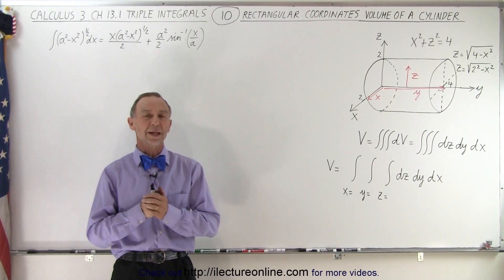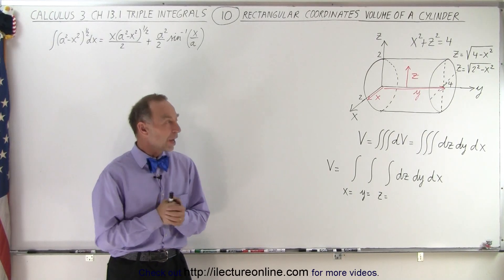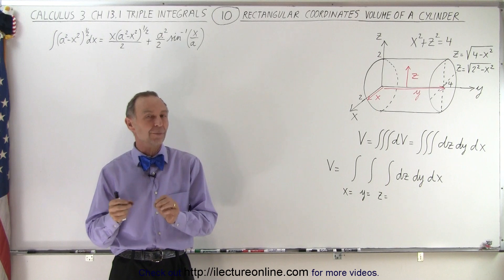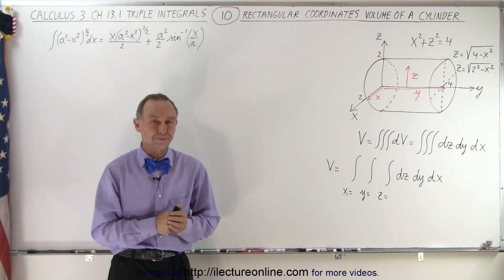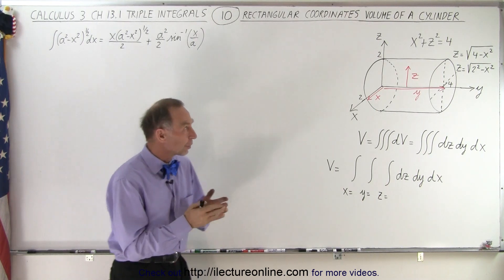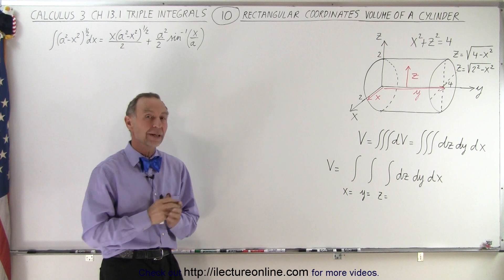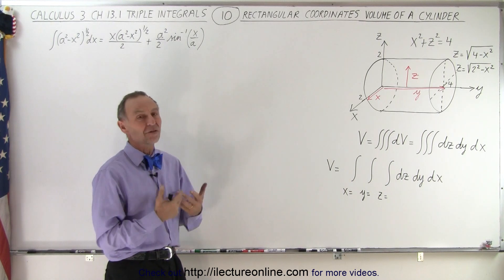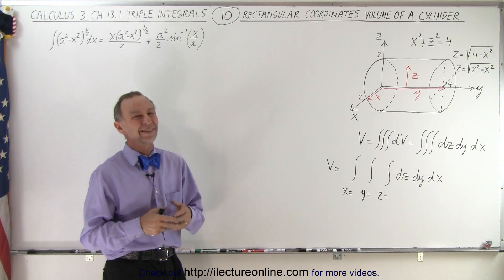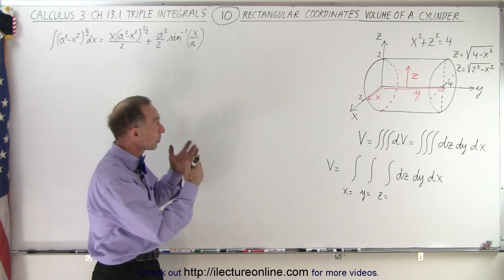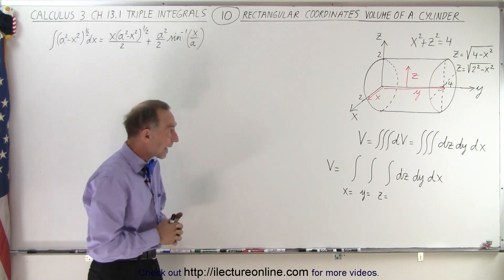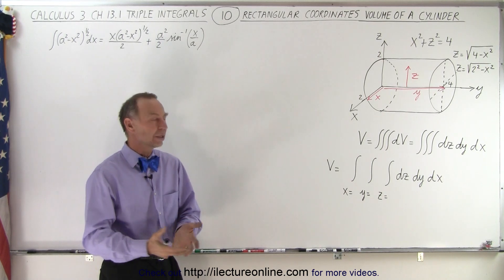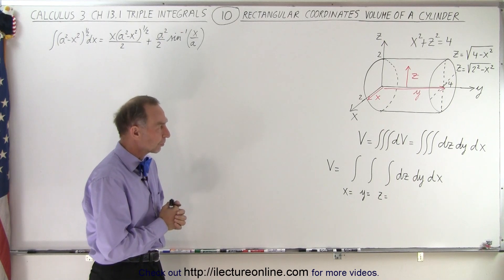Welcome to Electronline. We have an example that is slightly more difficult than the previous one. Here we have a cylinder instead of a prism. A cylinder would lend itself to using cylindrical coordinates instead of Cartesian or rectangular coordinates, but we want to learn how to do it with rectangular coordinates.